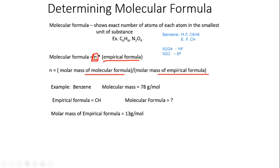For benzene, the molar mass of the molecular formula is 78 grams per mole. Its empirical formula is CH, which has a molar mass of 13. So we take 78 divided by 13, which equals 6. Then 6 times CH gives us C6H6 — the molecular formula of benzene. This is just one extra step at the end to go from empirical formula to molecular formula.